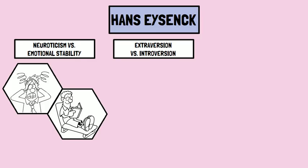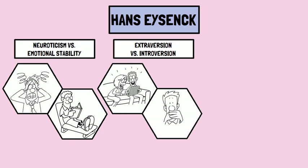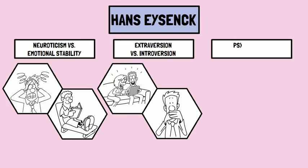The second dimension is Extroversion vs. Introversion, which refers to the degree to which people are socially outgoing or socially withdrawn. At one extreme are those people who are active, gregarious, impulsive, and thrill-seeking. At the other extreme are people who are passive, quiet, cautious, and reserved.